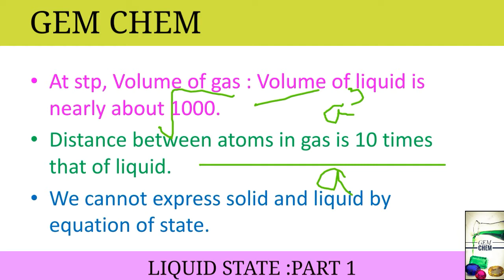Why can we not express solid and liquid by an equation of state? Because the distance between molecules in liquids and solids is very small, so the intermolecular forces — the cohesive force — are very large. The properties of these condensed phases depend on the details of the forces acting between the molecules, and these forces are different for different kinds of molecules. So different laws would be required for each kind of liquid or solid, which is not feasible. An equation of state is proposed for a general category, so we cannot express solids and liquids by one.